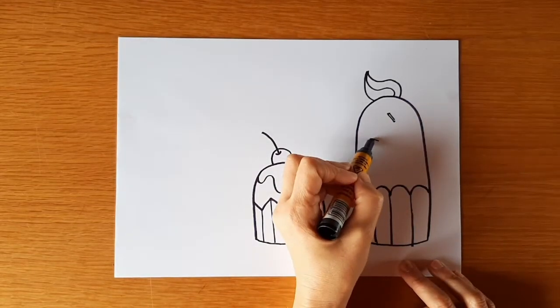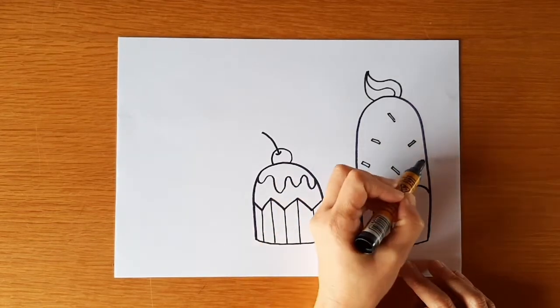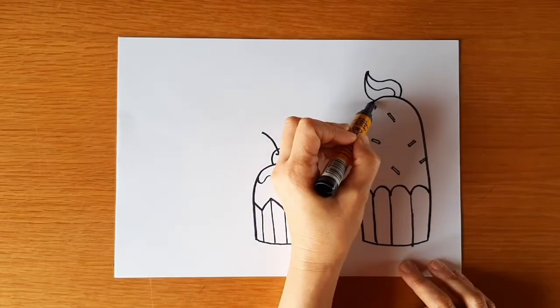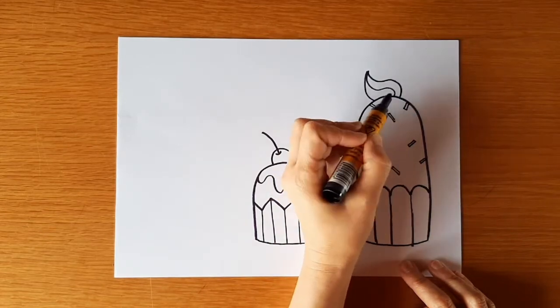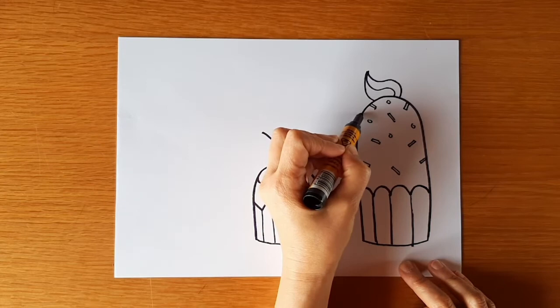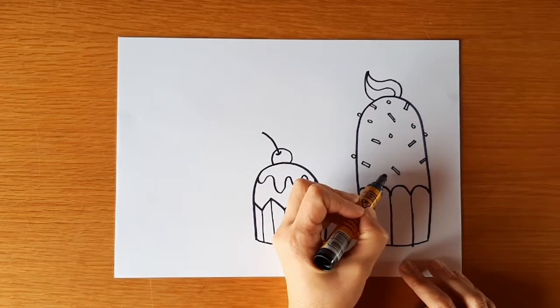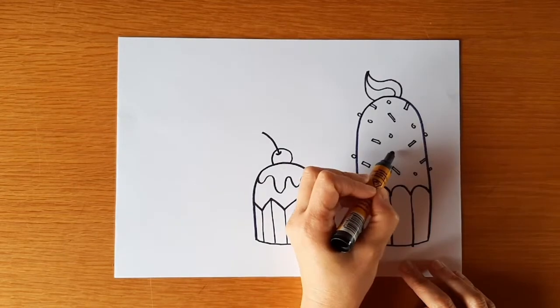For the decoration, let's draw lots of little rectangles. Followed by little circles. Now we have a tall cupcake with cream and sprinkles. Mmm, I'm getting really hungry now.